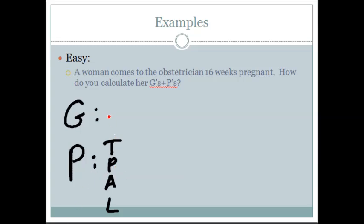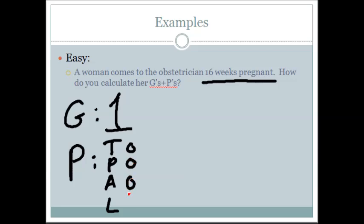For the gravida — how many pregnancies has she had total? We know she hasn't had any prior to this, but she is currently pregnant, so she has one pregnancy. Her term: how many term pregnancies has she had? She hasn't come to term yet, so it would be zero. So it could be written out T0, P0, A0, L0 — or simply P0. So a G1P0 is a pregnant woman for the very first time who has not delivered yet.